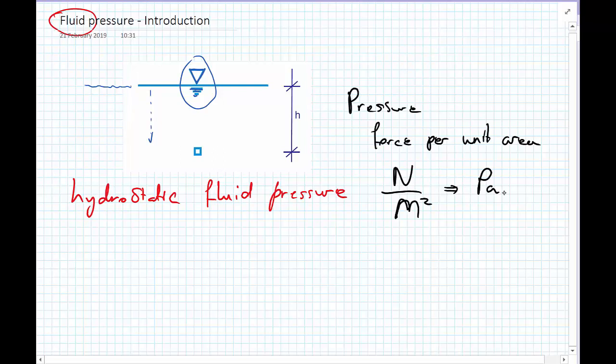This is sometimes called a pascal. One newton per meter squared is a pascal. That's the definition of pressure, force per unit area.